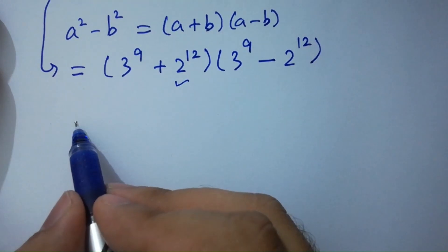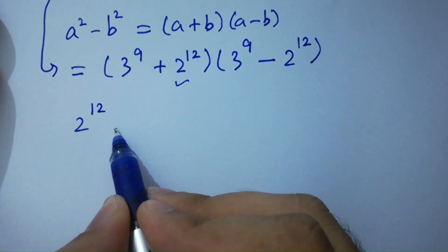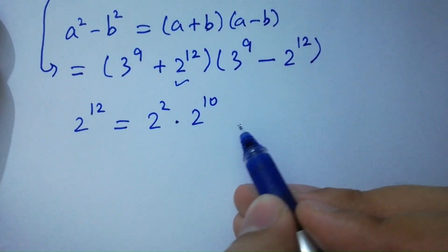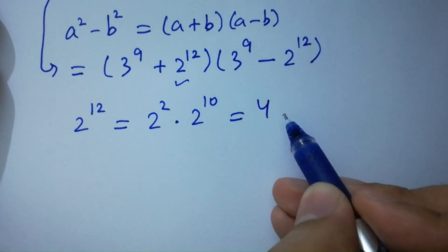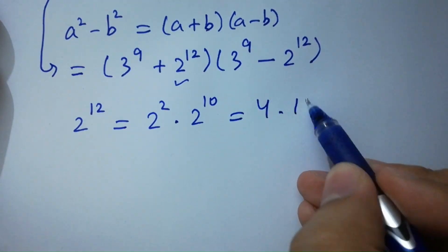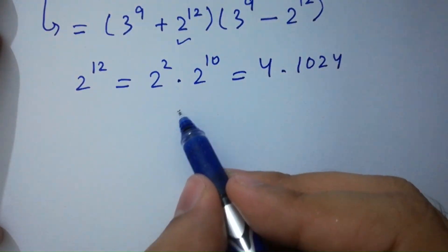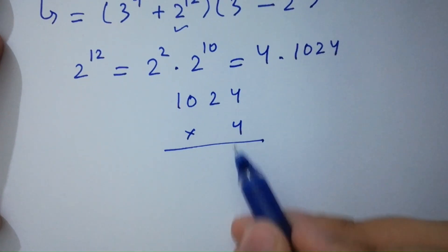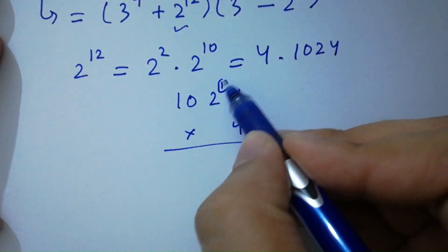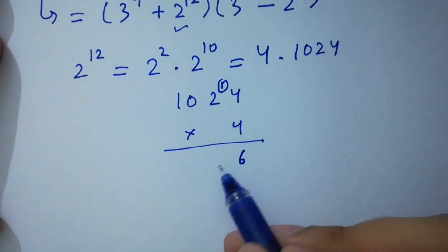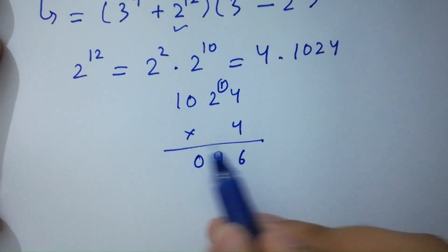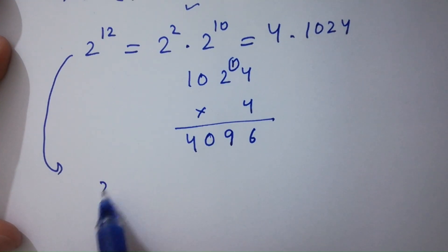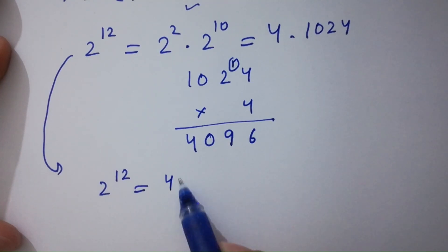First, let's compute 2^12. We write 2^12 as 2^2 times 2^10 (since 10 plus 2 is 12). That is 4 times 1024. Multiplying: 4 times 1024 gives us 4096. So 2^12 equals 4096.